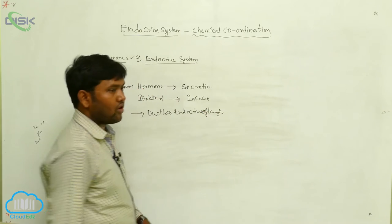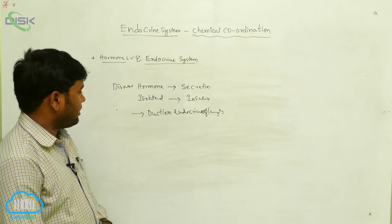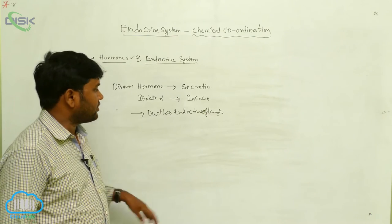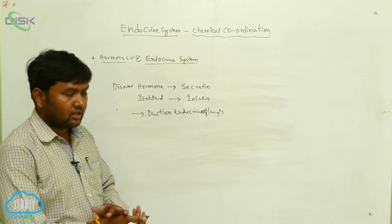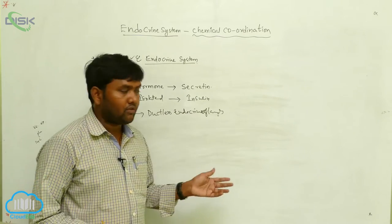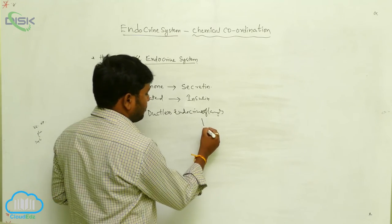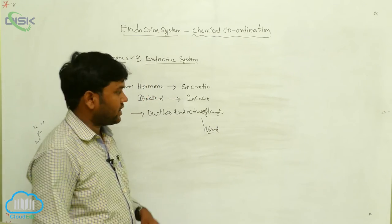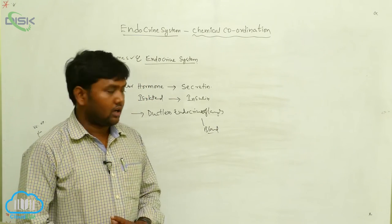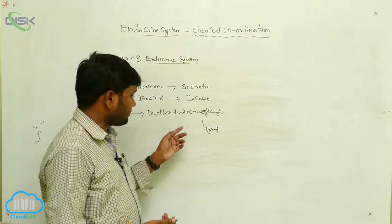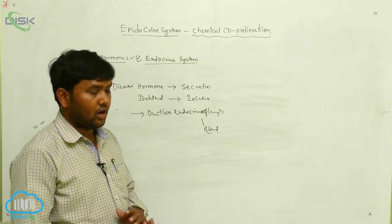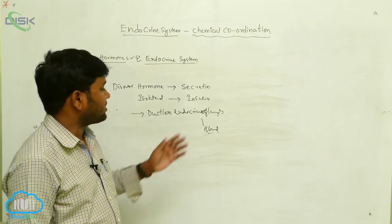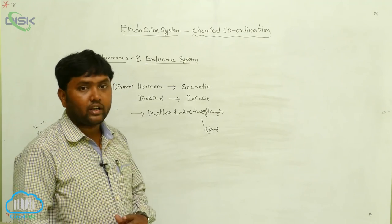Endocrine glands are called ductless glands. When hormones are released from the glands, they are directly transferred into the blood — there is no transport through ducts. Because of the absence of ducts, they are called ductless endocrine glands.